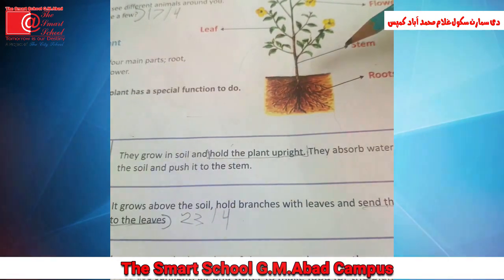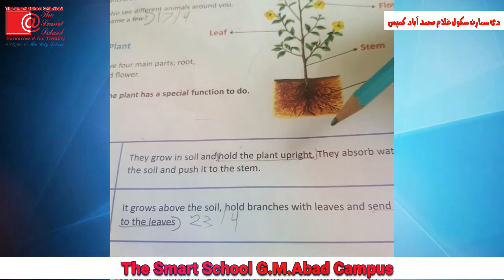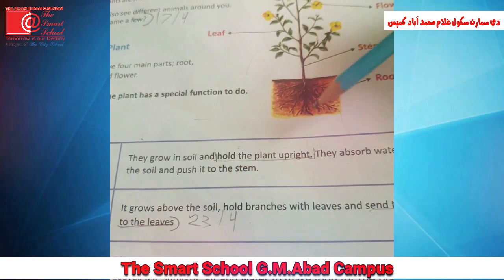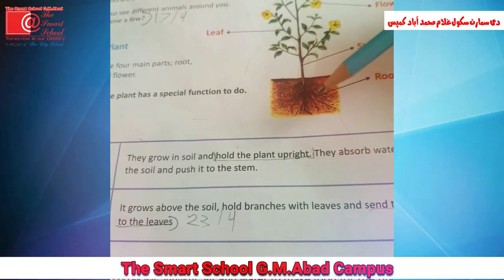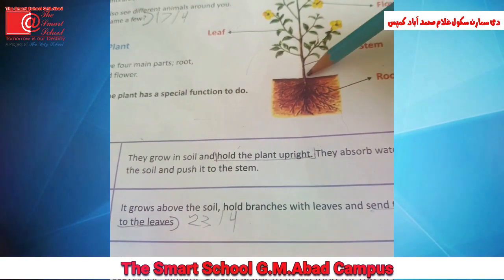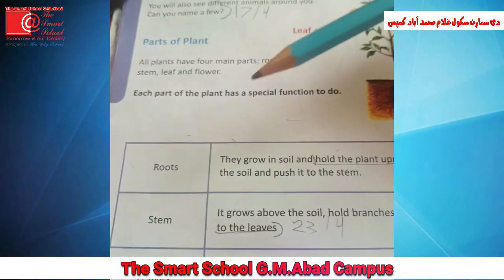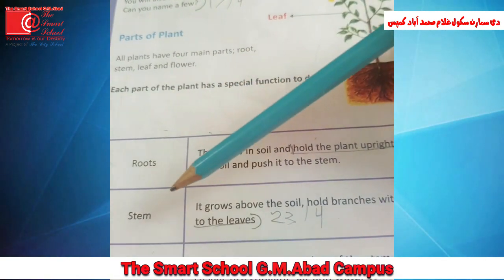اور پھر stem کی طرف move کر دیتی ہیں۔ زمین سے پانی لے کے roots کا یہ function ہوتا ہے کہ وہ زمین سے پانی لے کے stem کی طرف move کر دیتی ہیں۔ Next one is stem.